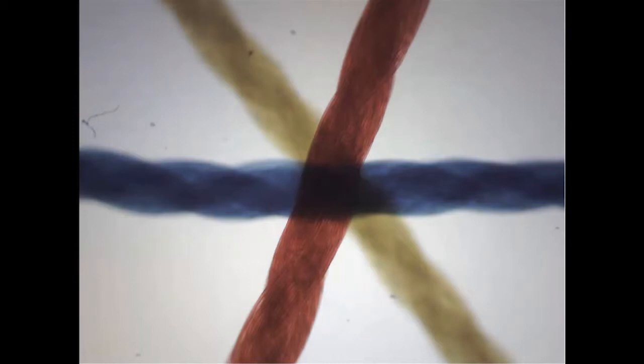I'm going to adjust the adjustment knob until the threads are clearly in focus. Now our threads are clearly in focus and we can see the intersection of the three colored threads on the microscope.